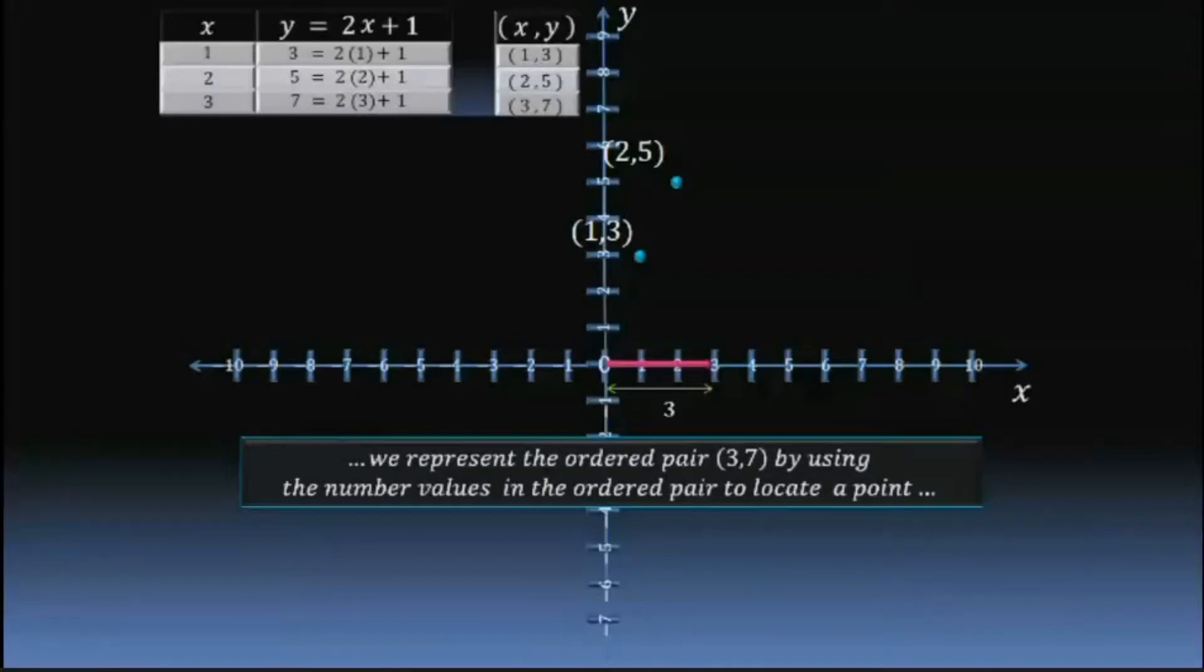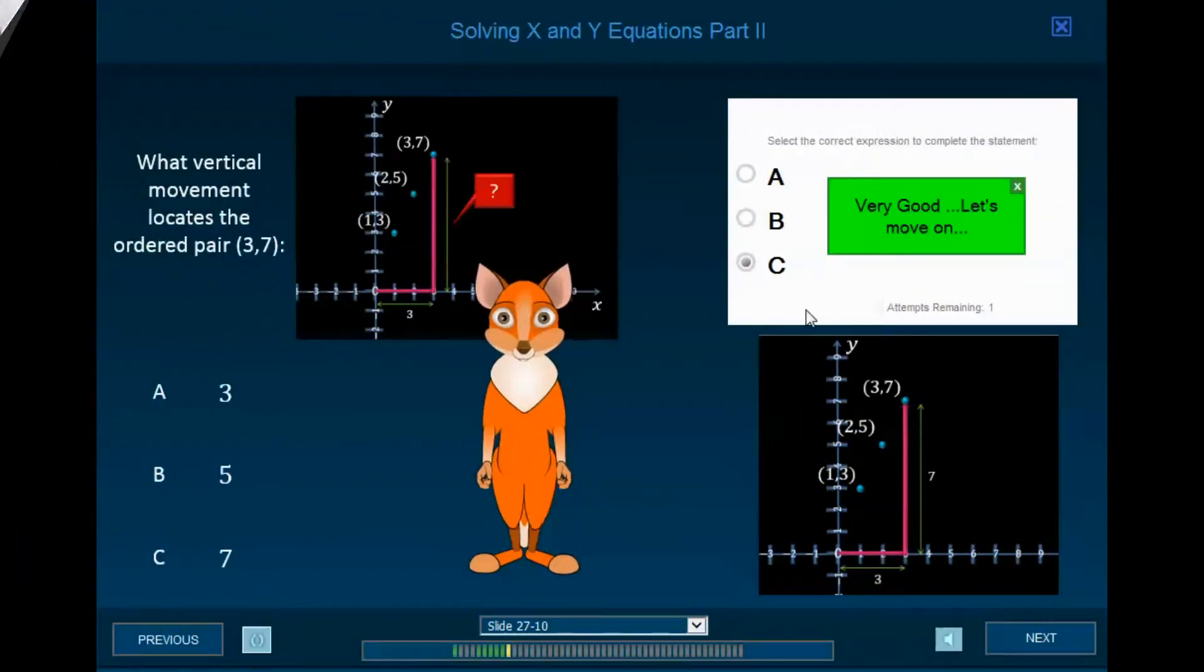And then moving 7 units in the positive y direction to represent y. We mark that point. Nicely done. The vertical movement that locates the ordered pair 3, 7, is 7.